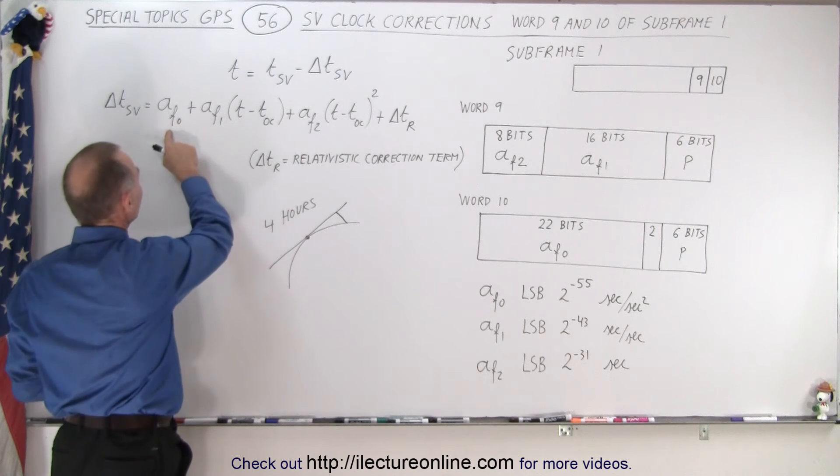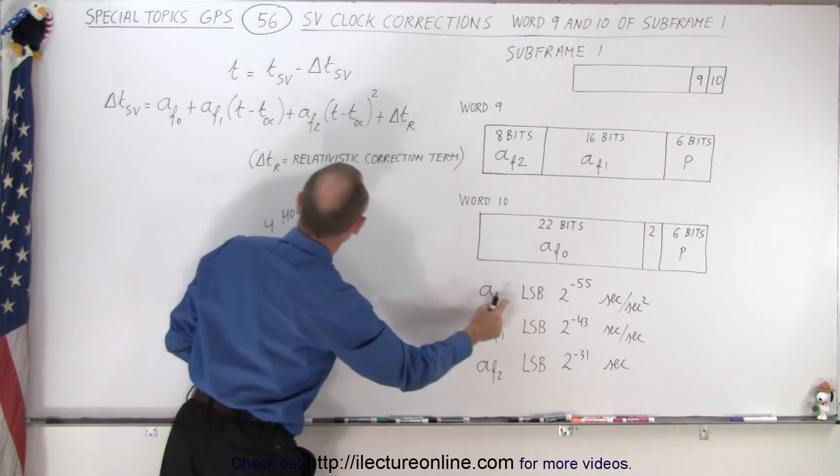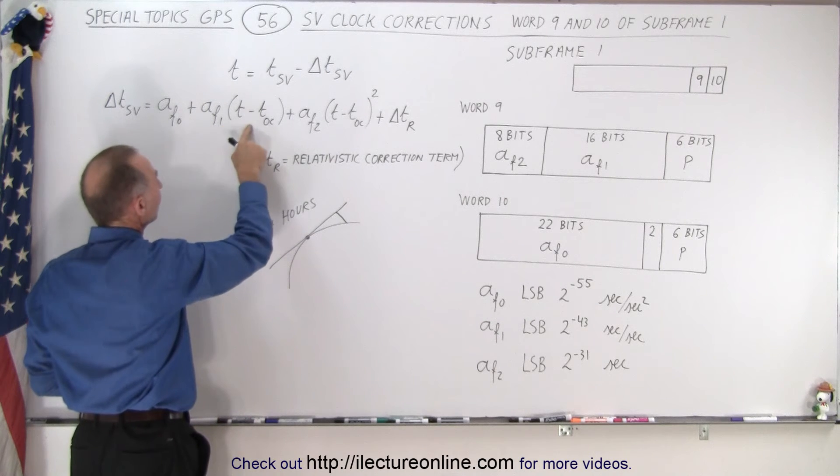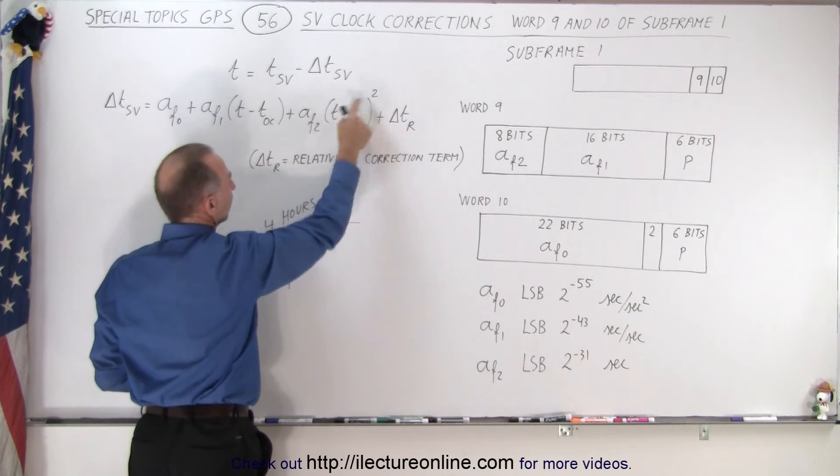So then we have these coefficients. The constant coefficient is AF0 which is right here, the coefficient of the term to the first power is AF1...